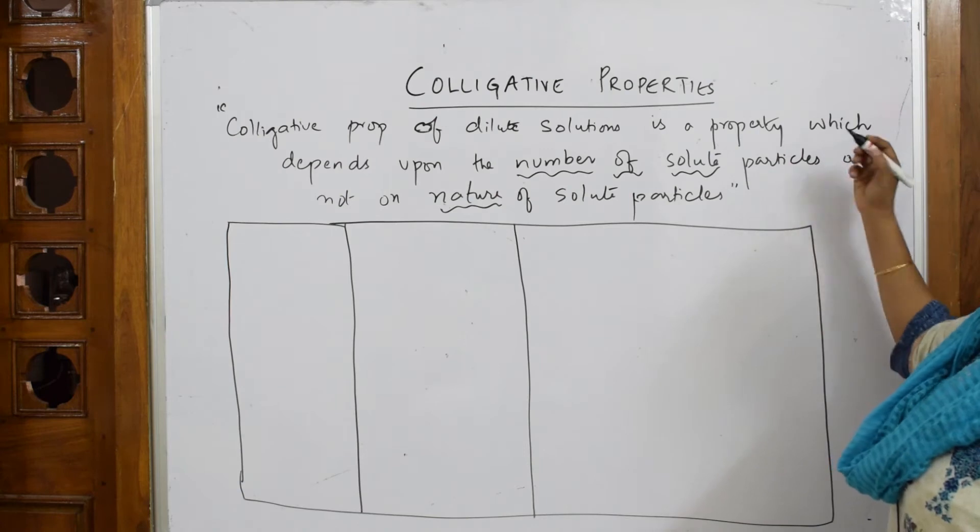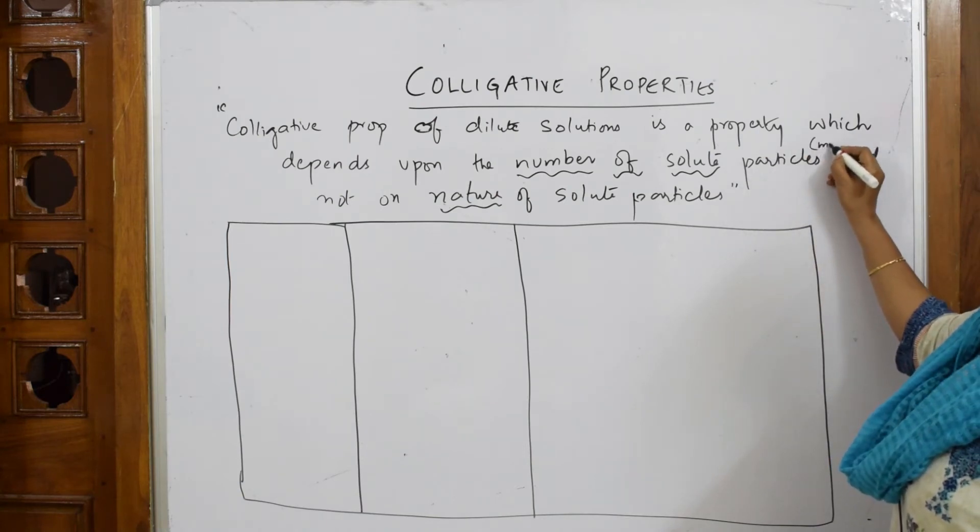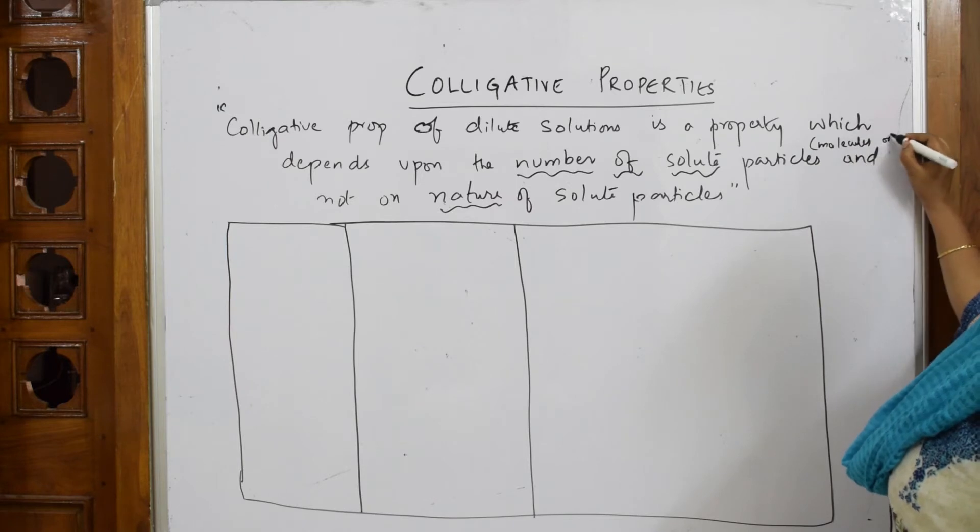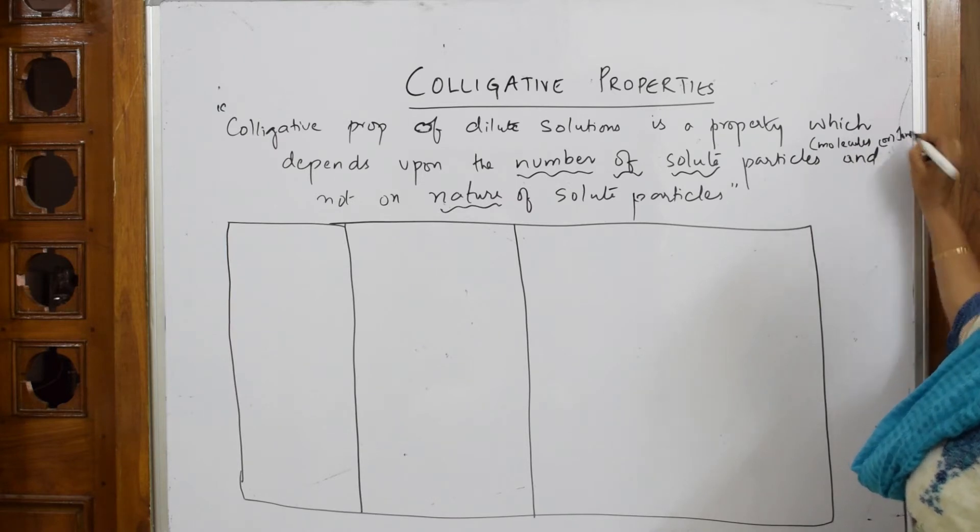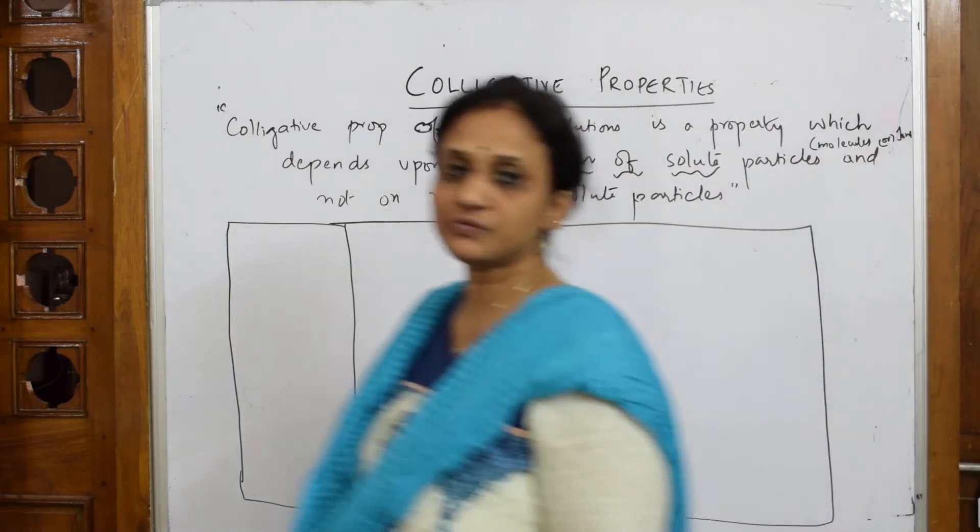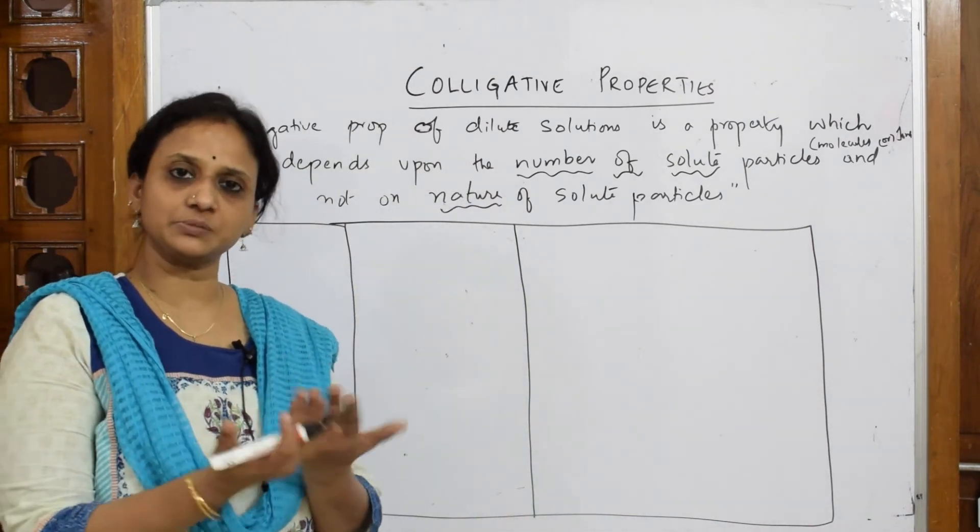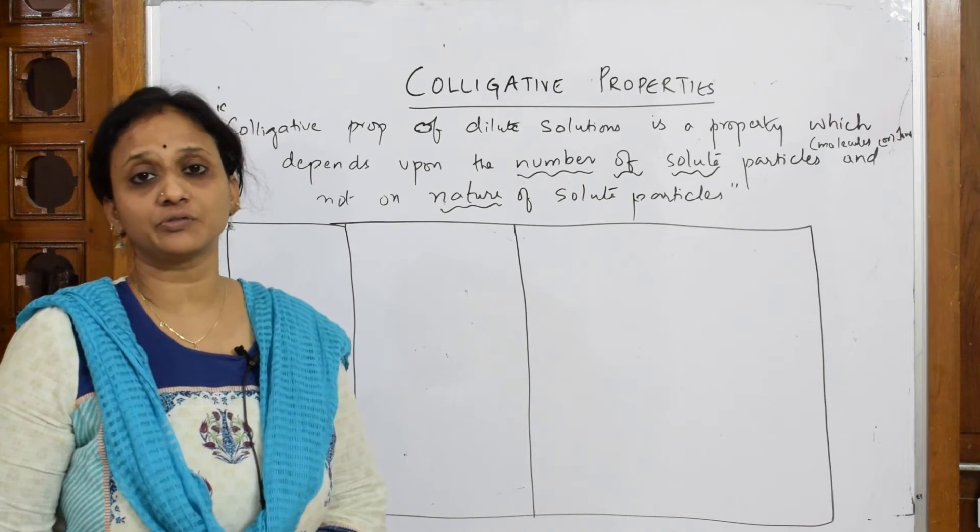So number of solute particles. The solute particles can be molecules or ions. So with this colligative property, when we are learning, basically the whole concept revolves around your number of solute particles.